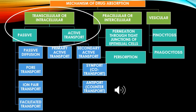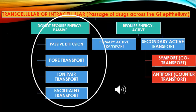We will first talk about passive transcellular transport. Passive diffusion is based on Fick's law. Pore transport involves transport through pores of various sizes. Ion pair transport is seen for drugs which ionize under all pH conditions. Facilitated refers to facilitation by forming a complex.